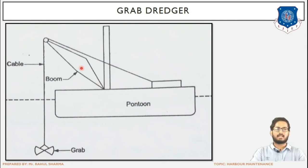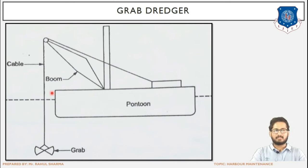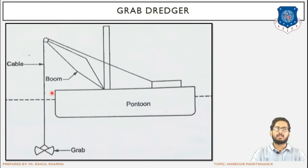Mechanism of the grab dredger: the grab starts in its original position, then using the boom it is taken to the excavation point. It is given a free fall — dropping under gravity toward the seabed. Then a pull is applied to the cable, the jaws close and fill with excavated material. The cable is raised, the grab is taken to the deposition point, the jaws open and release the sediments, and the grab returns to its original position — 4 to 5 operations per cycle.